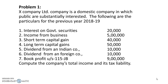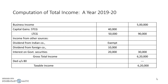Book profit is directly given as 9 lakh, so there is no need to calculate it. When book profit is directly given, MAT under Section 115JB must be applied. Now we'll compute the total income for assessment year 2019-20.